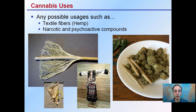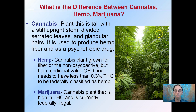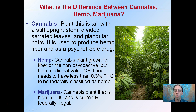Cannabis can also be used for its narcotic or psychoactive compounds, so it kind of serves two different purposes. What's the difference between cannabis, hemp, and marijuana? This is a very important distinction. Cannabis the plant is tall with a stiff upright stem, divided into serrated leaves with glandular hairs, and is used to produce hemp fiber as well as a psychotropic drug.